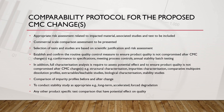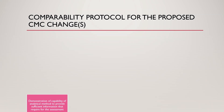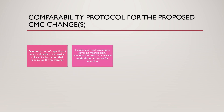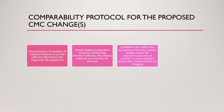Any other product-specific test comparison that has potential effect on quality should be included. Protocols should demonstrate the capability of the analytical method to provide sufficient information required for the assessment. It includes analytical procedure, sampling methodology, statistical methods, data analysis method, and rationale for their selection. It establishes and confirms the acceptance criteria for routine quality control and full characterization testing of the product to ensure product quality after implementation of the changes, including acceptance criteria for statistical analysis, impurity profile, stability study, and any product-specific test.